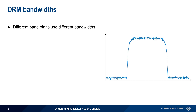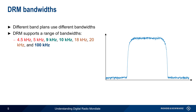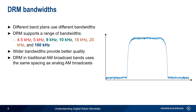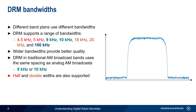Since different band plans use different channel widths, DRM supports a wide range of bandwidths from 4.5 kHz to 100 kHz. In general, the wider the bandwidth, the better the audio quality. In the traditional AM medium wave broadcast bands, DRM normally uses traditional AM spacing, that is 9 kHz or 10 kHz. Bandwidths such as 4.5 kHz or 20 kHz are so-called half and double widths, which allow either greater station density or better quality, respectively. In the VHF or FM bands, DRM uses the 100 kHz spacing that's used for FM broadcasts in most parts of the world.